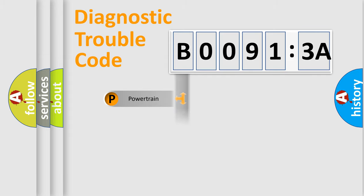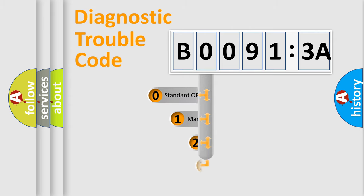Powertrain, body, chassis, network. This distribution is defined in the first character code.